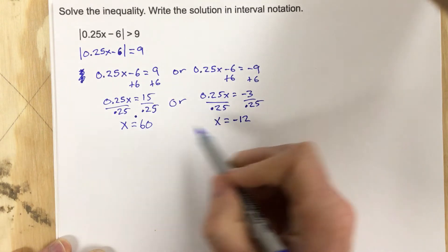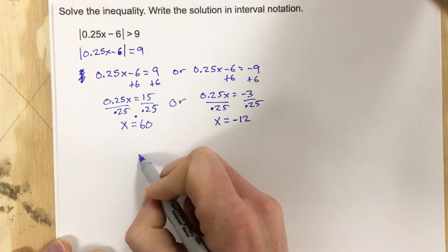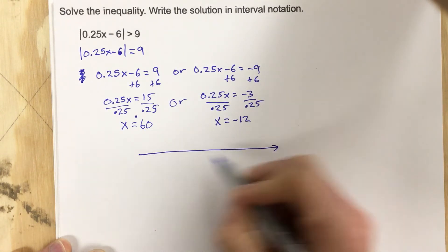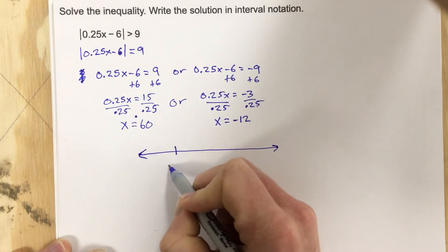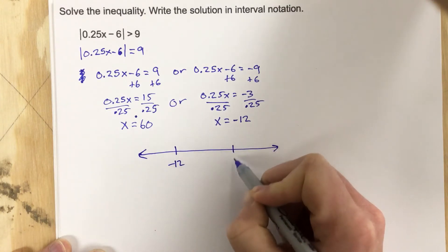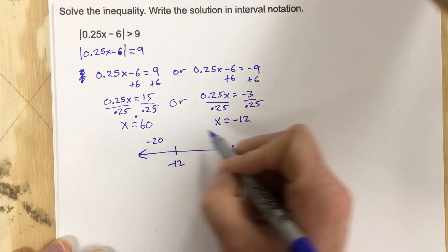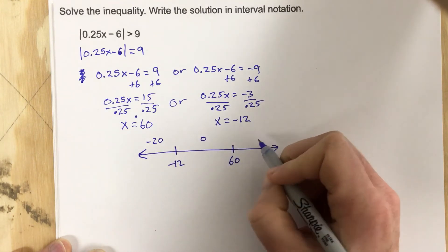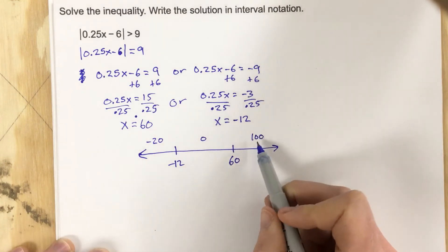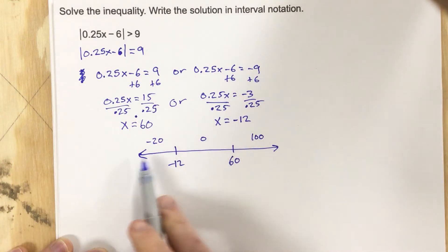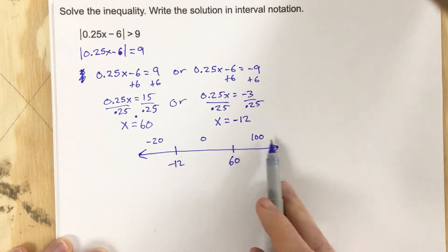Now we have x is 60 and x is negative 12. What we need to do is we need to draw the number line, mark negative 12, mark 60, and then I'm going to check some points. I'm going to check negative 20, I'm going to check 0 because it's in between there, and I'm going to check 100. And I'm picking these numbers because they're to the left, in the middle, between the two roots, and to the right.